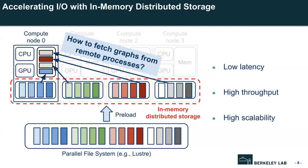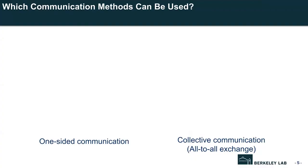To fetch data from remote memory locations, the communication layer of in-memory distributed storage needs to provide the data plane and control mechanism. A common way of implementing this is through the message passing paradigm using libraries like MPI or ZeroMQ. There are two ways to load data from remote memory using this communication layer: one-sided communication and collective communication.